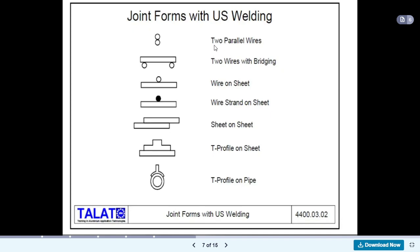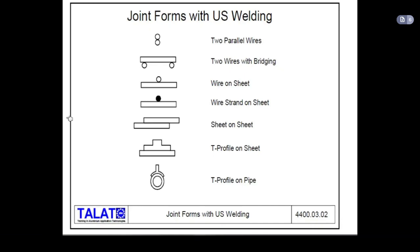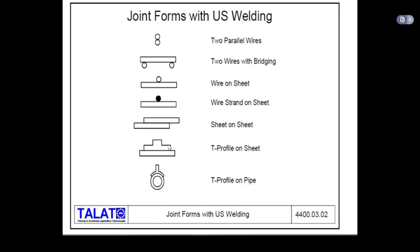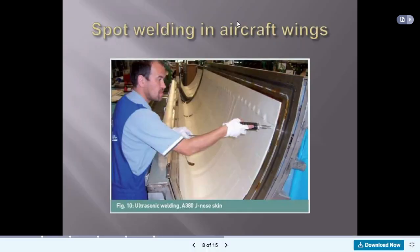The types of joints that can be formed by ultrasonic welding include: two parallel wires joined together, wire on sheet, sheet on sheet, and T-profile on a pipe. We can join wires together, sheet with two wires, sheet with one wire, and this process is also used for spot welding of aircraft wings.